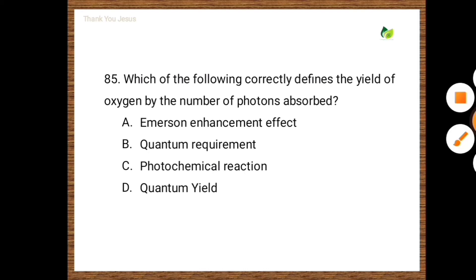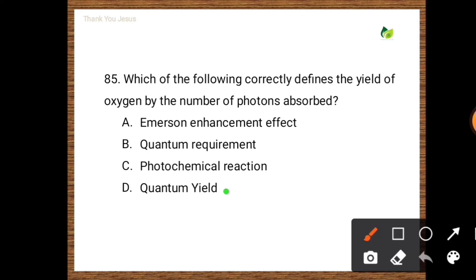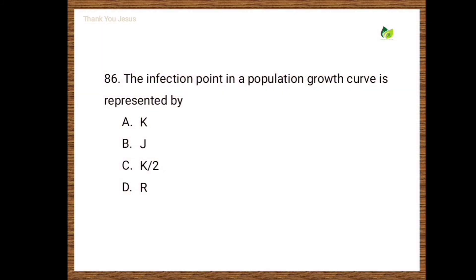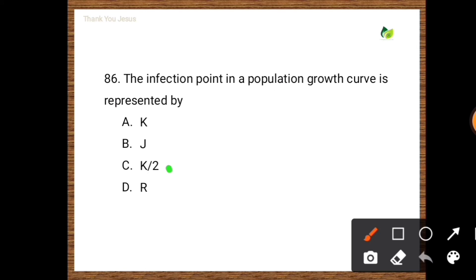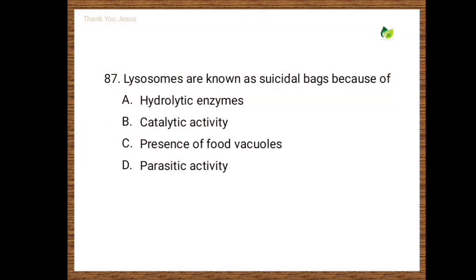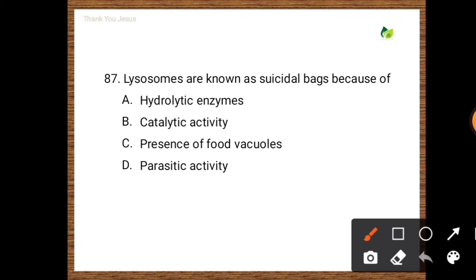Next question: The inflection point in a population growth curve is represented by K/2. Next question: Lysosomes are known as suicidal bags because of — hydrolytic enzymes, catalytic activity, presence of food vacuoles, parasitic activity. The correct option is due to presence of hydrolytic enzymes.